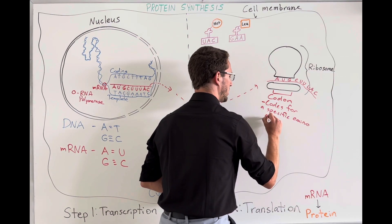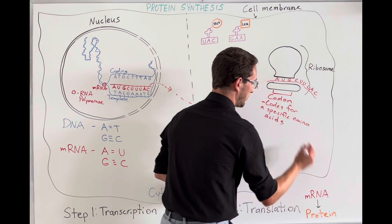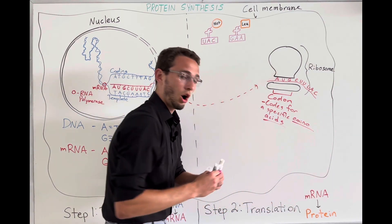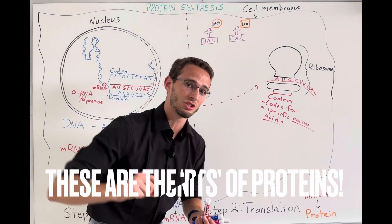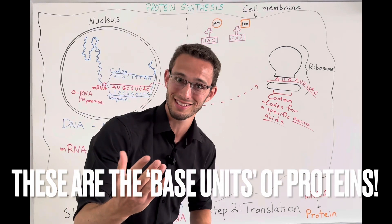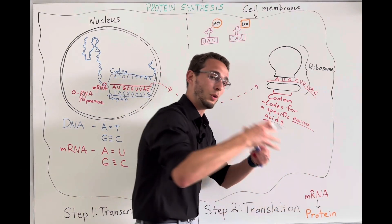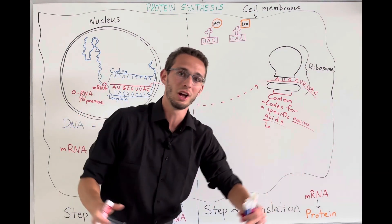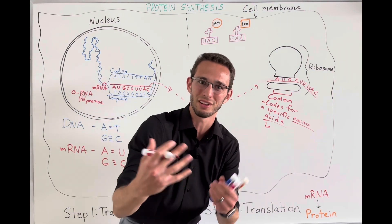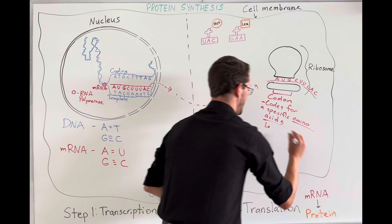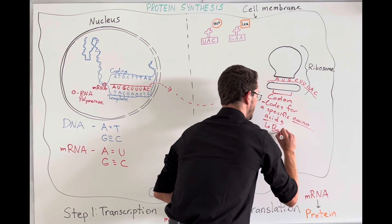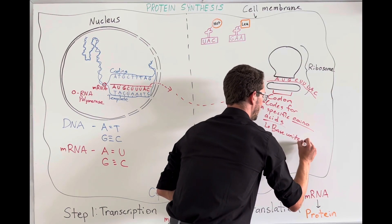Now, you may have heard of amino acids before. Maybe you haven't. But what amino acids are, are the base units of proteins. They are the base units of proteins. So therefore, if we put these amino acids together, we will produce the protein that I talked about at the very beginning. The structure and function for the cell.